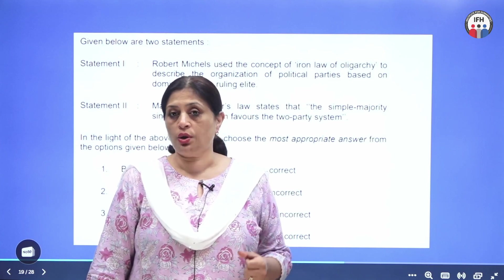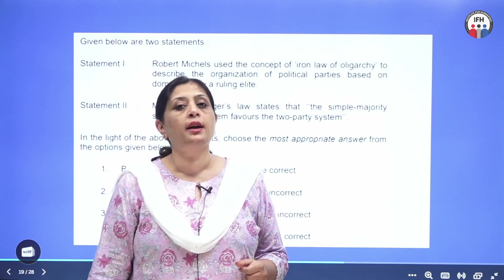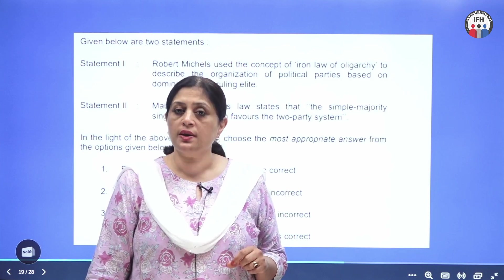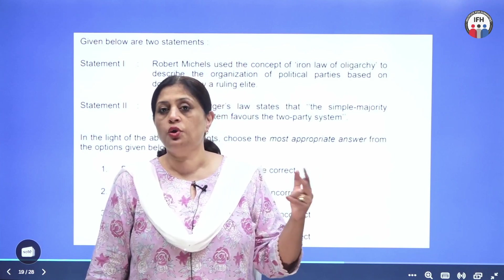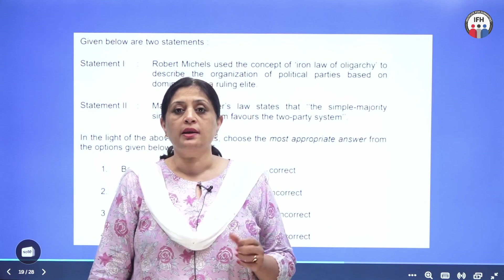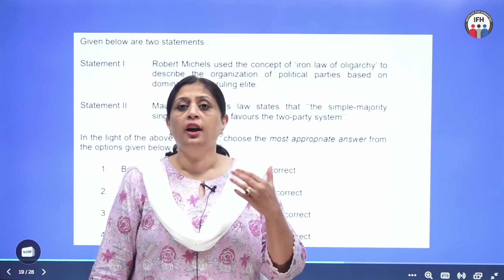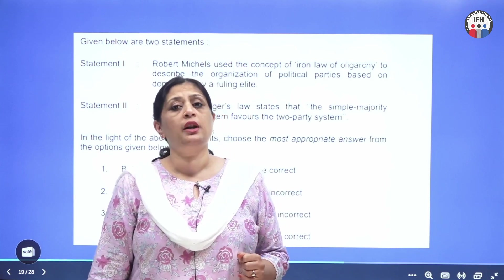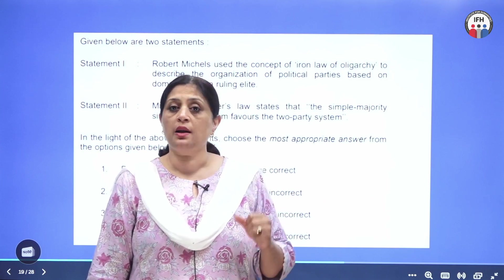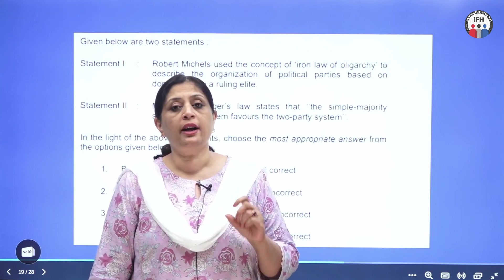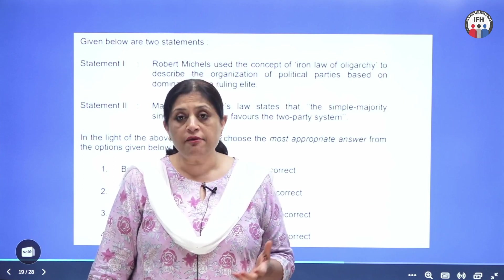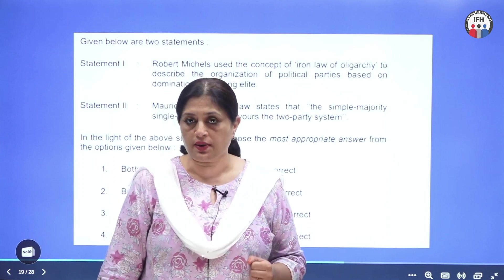What is Duverger's law? Duverger's law tells that if a country has the majoritarian system, it is going to have a two-party system. And if a country has proportional representation as an electoral system, it will have a multi-party system. Why is India an exception? Because despite having a majoritarian electoral system, India never had a two-party system.